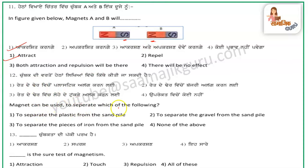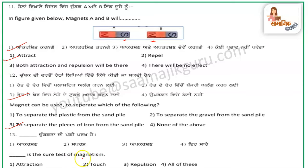A magnet can be used to separate pieces of iron from a sand pile. Question number 13: what is the sure test of magnetism? The answer is repulsion.